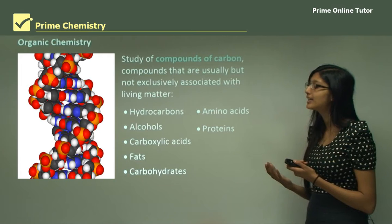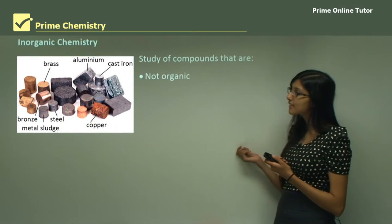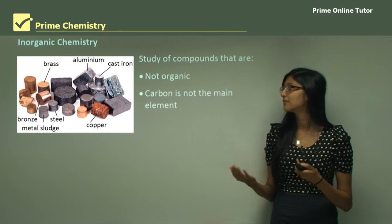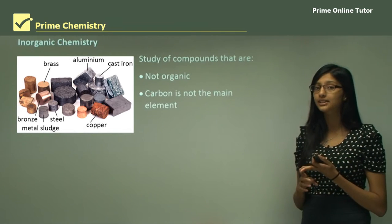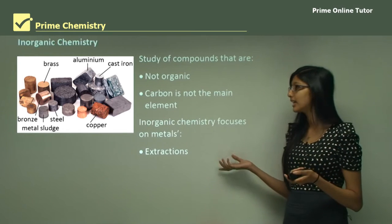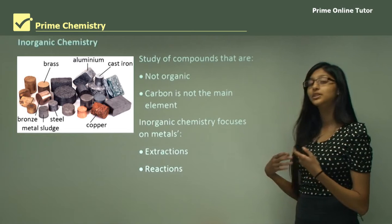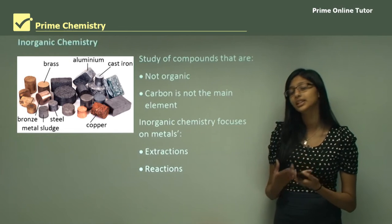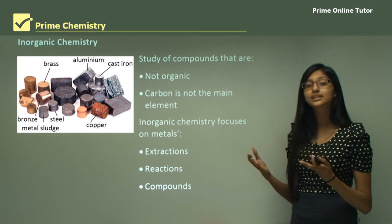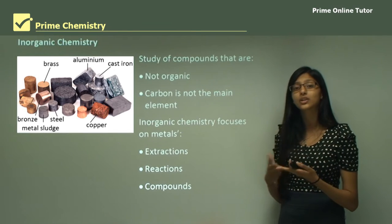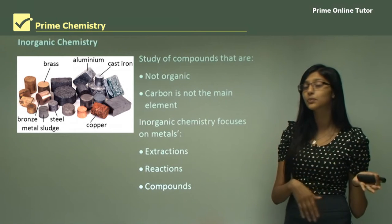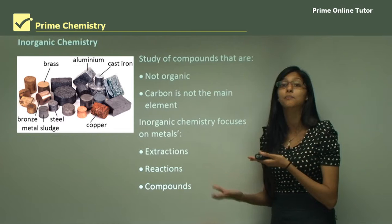Inorganic chemistry is the study of compounds that are not organic — therefore carbon is not the main element. Inorganic chemistry looks at metals: the extraction of metals, what reactions these metals are involved in, and what kinds of compounds they form. So inorganic and organic chemistry are very different — organic chemistry focuses on living systems, whereas inorganic chemistry mainly focuses on metals.